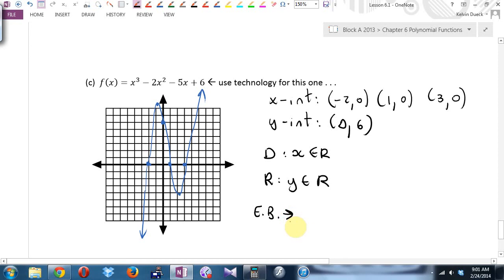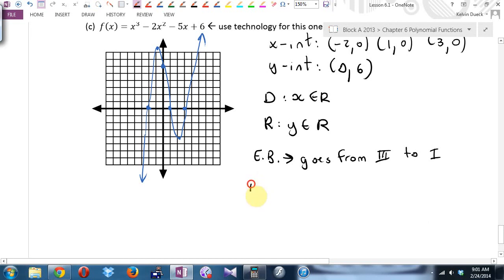What's the end behavior? If we read from left to right, what quadrant do we start in? What quadrant goes from quadrant three, two, and what quadrant does it leave? Quadrant one. How many turning points are there? Two. What we call the max and the min. Okay.